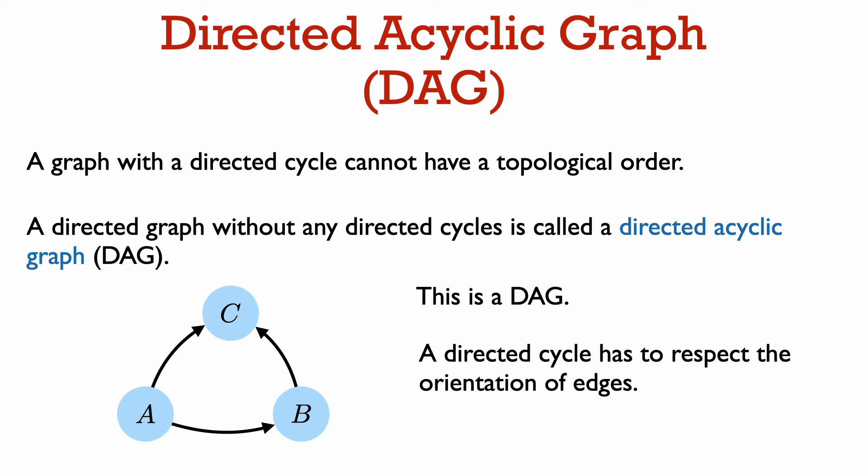So this example graph here on three vertices is a DAG. It has no directed cycles. There is no edge going out of vertex c, so vertex c cannot be part of a directed cycle. And also there is no edge going into a, so a also cannot be part of a directed cycle.